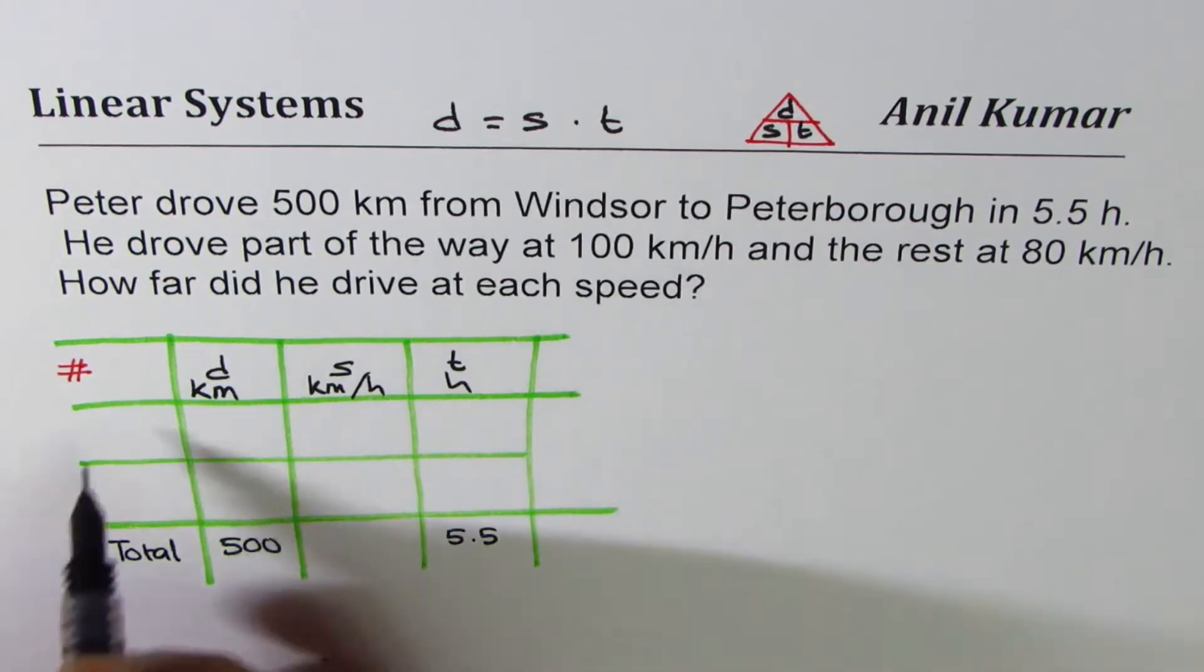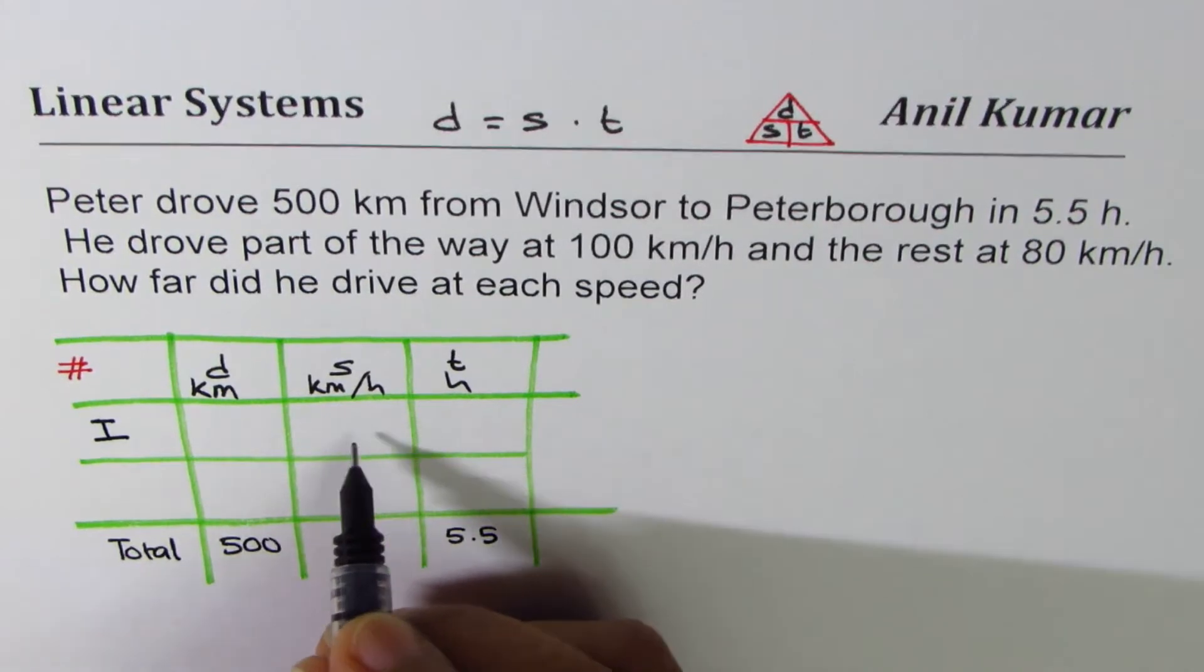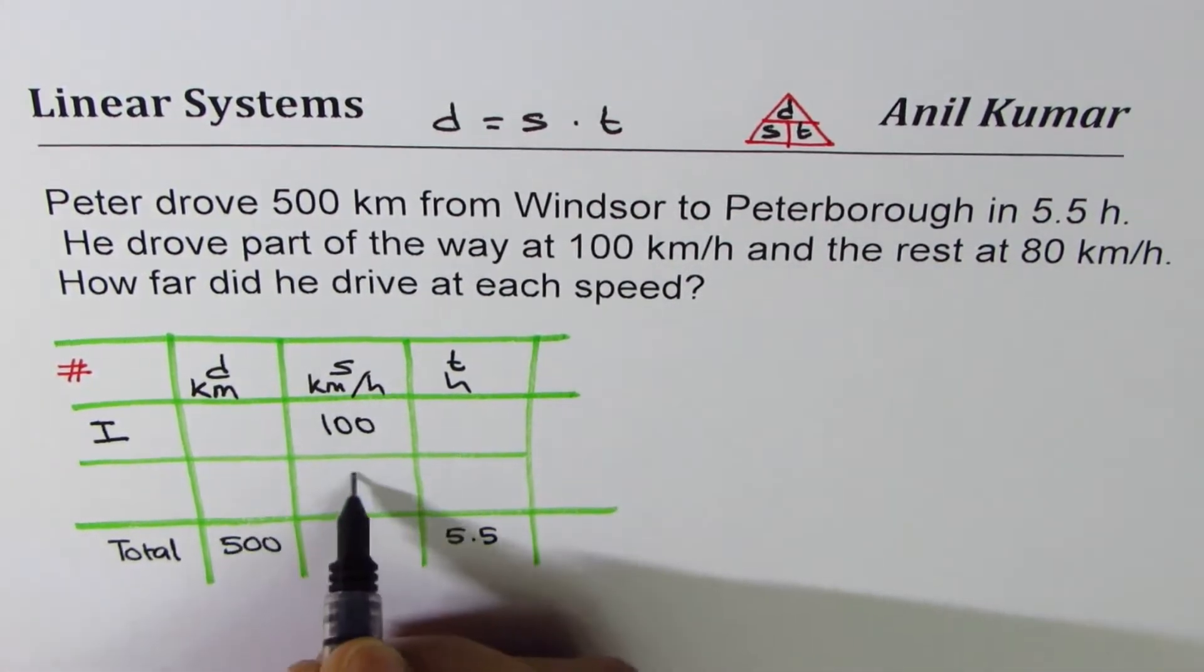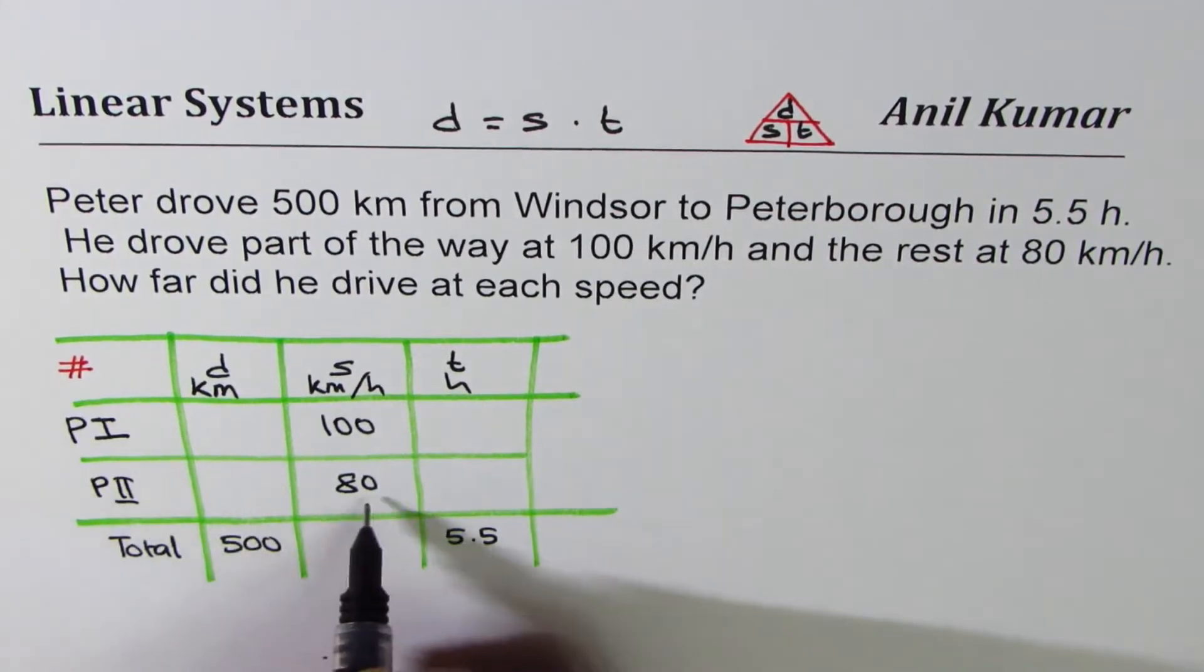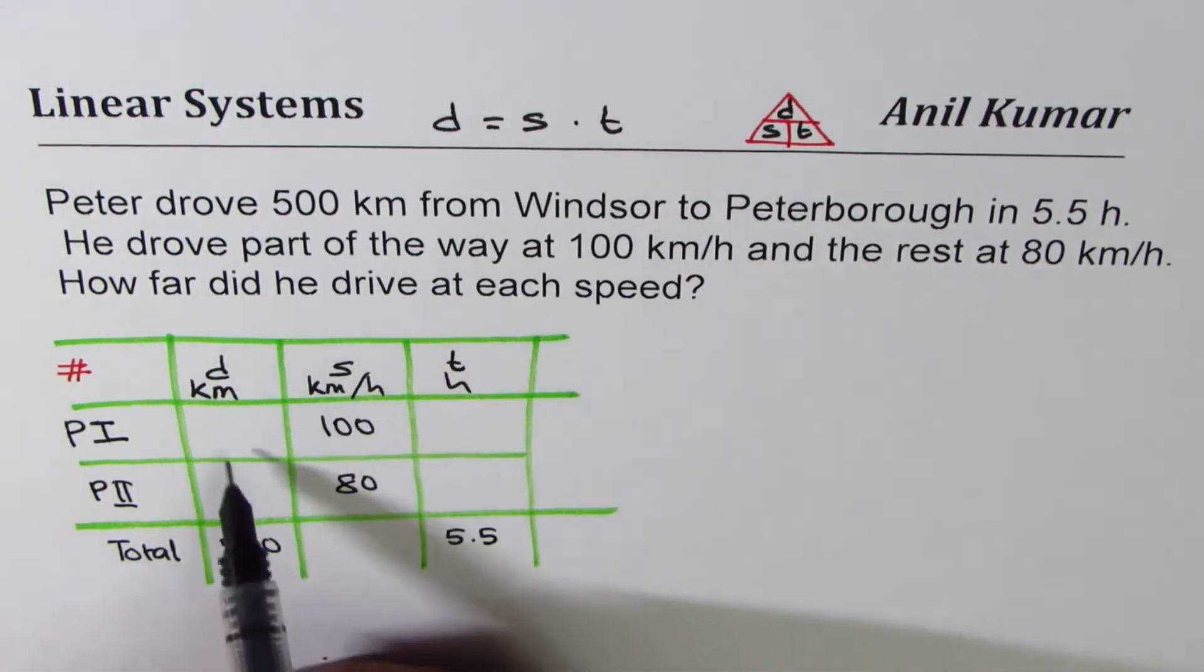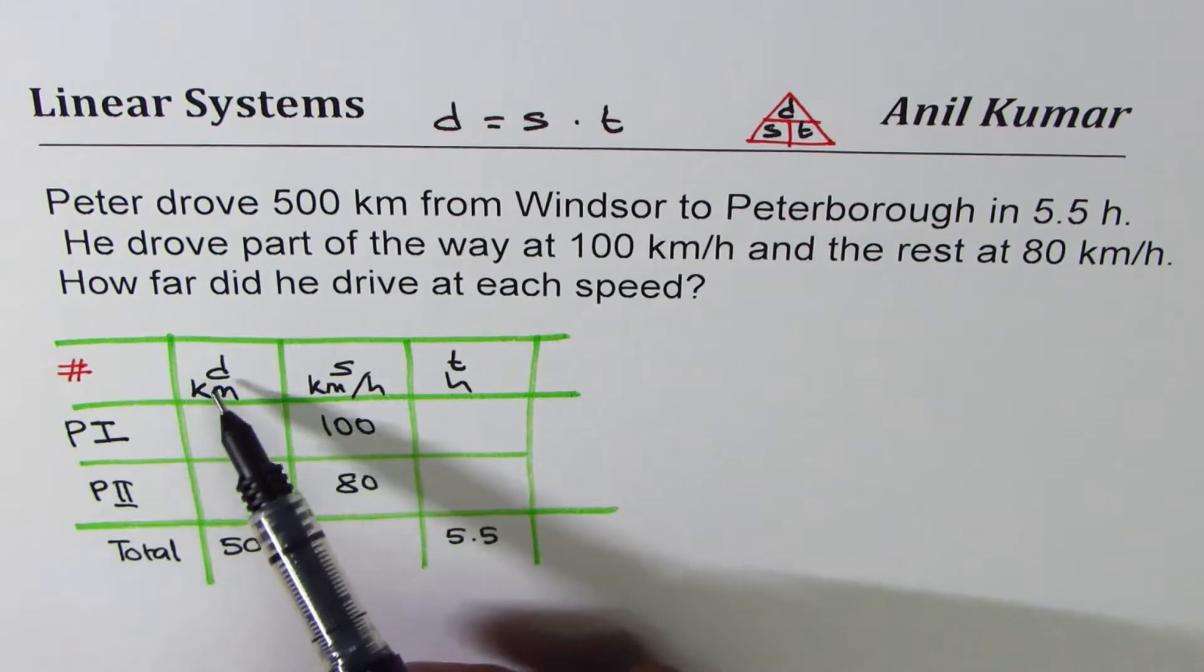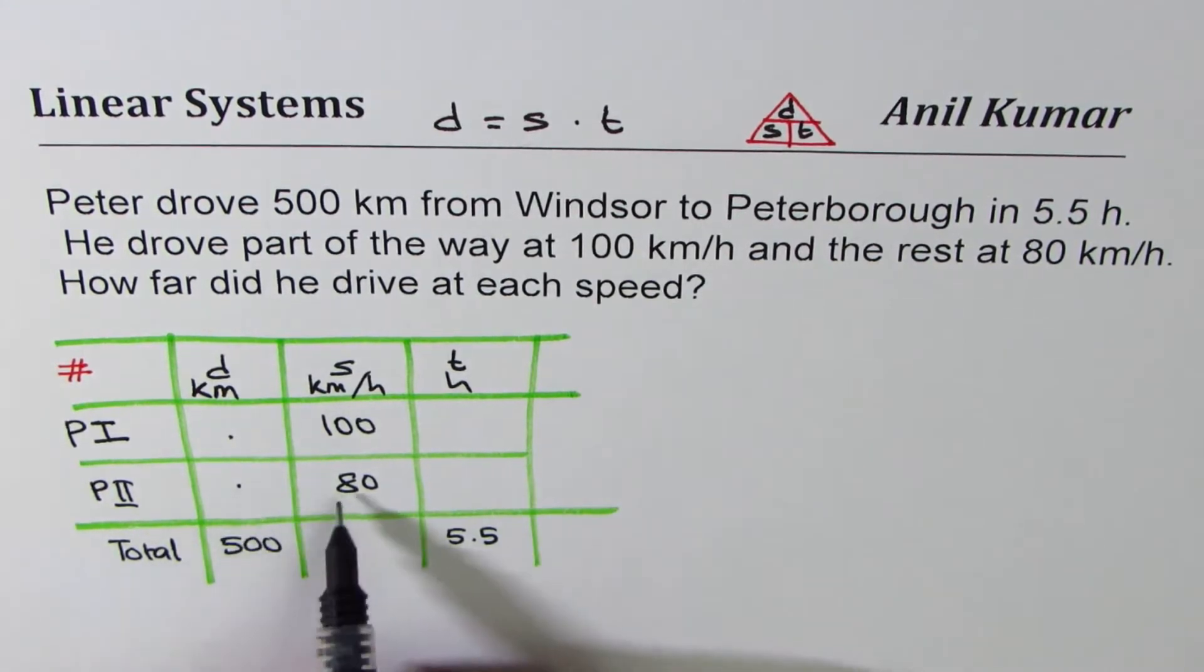He drove part of the way at 100 kilometers per hour, that's part one. And the rest at 80 kilometers per hour, let's say part two. How far did he drive at each speed? So we need to find distance driven. You could take x and y as distance traveled at 100 kilometers per hour and distance traveled at 80 kilometers per hour.